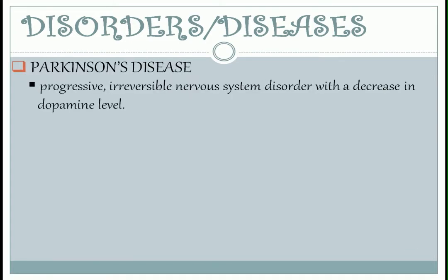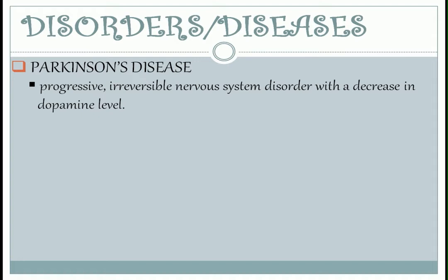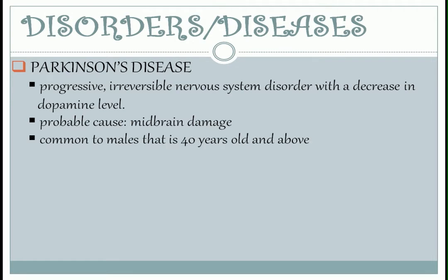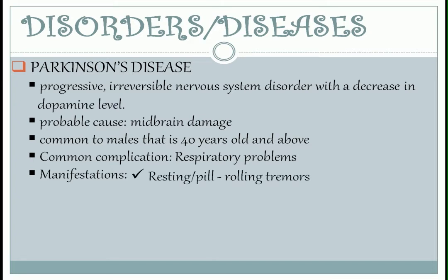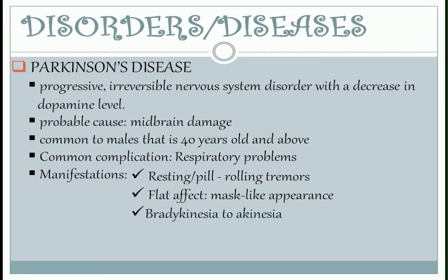Parkinson's disease — it is a progressive, irreversible nervous system disorder with a decrease in dopamine level. Note: dopamine is for coordinated muscle movement and it's also a muscle relaxant. The probable cause is midbrain damage. It is common in males 40 years old and above. Common complication is respiratory problems. Manifestations: resting pill-rolling tremors — this is the initial and hallmark manifestation. Flat affect or the mask-like appearance. Bradykinesia to akinesia — from slow to absence of voluntary movement. Propulsive shuffling gait — from tiptoe walking to a running pace.